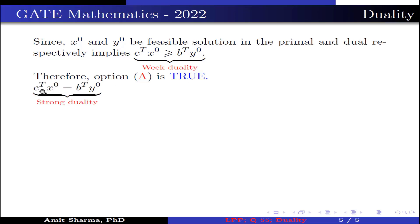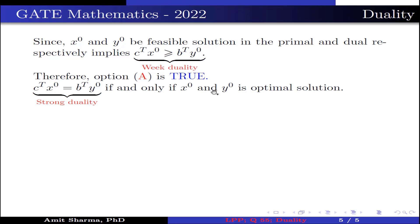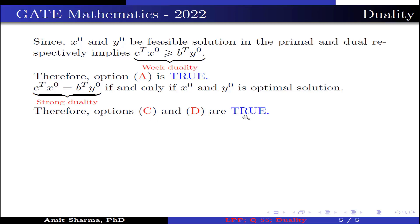Also, C^T x0 = b^T y0 if and only if x0 and y0 are the optimal solutions — this is because of the strong duality principle. Therefore, options C and D are also true. Hence, options A, C, and D are true.